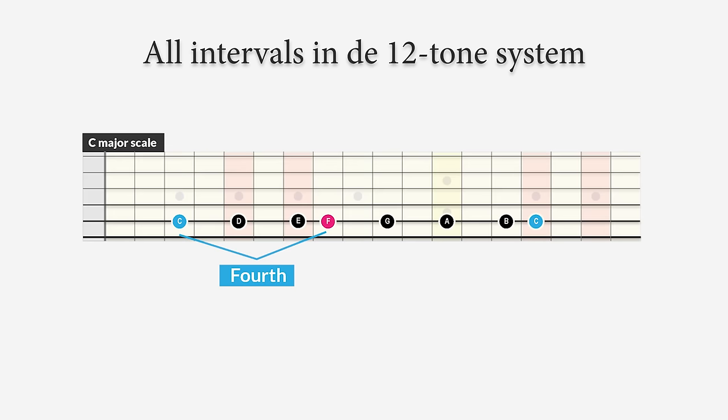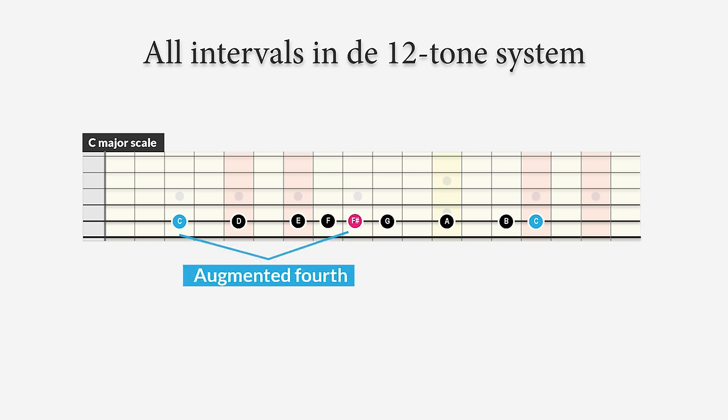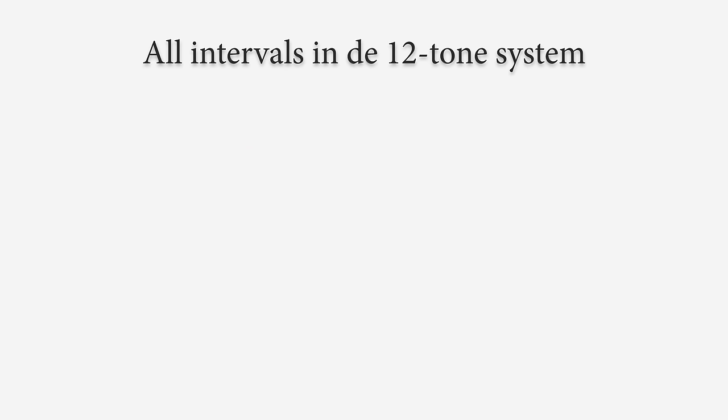The fourth can be C to F, or also C to F-sharp. We call the distance between C and F a perfect fourth because it's a perfect consonant sound. The interval between C and F-sharp is called an augmented fourth, also known as a tritone. It's one of the most dissonant intervals and is often used for creating tension and release.